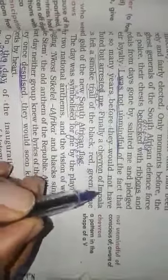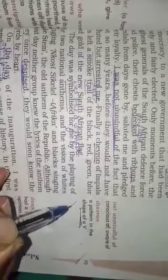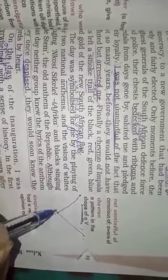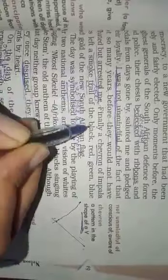Finally, a chevron of Impala jets - chevron is a pattern in the shape of V - so there were many jets making a pattern of V in the air, and what these jets were doing was leaving a smoke trail of black, red, green, blue, and gold to honor the new South African flag.